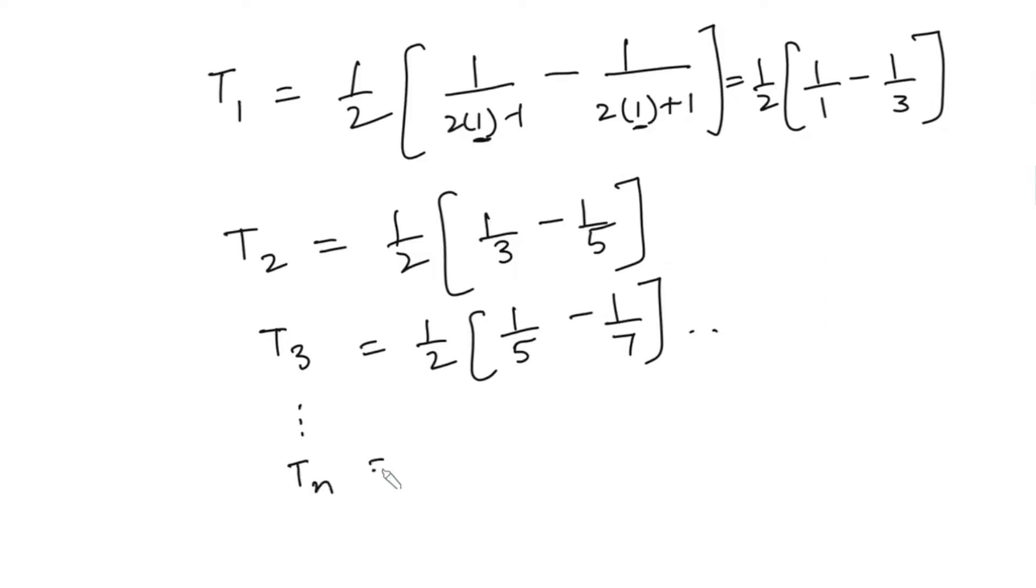Similarly, Tn will be equal to 1/2 times [1/(2n-1) - 1/(2n+1)]. Here we can see that we can cancel out negative 1/3 with positive 1/3, negative 1/5 with positive 1/5 when we add all the terms. Similarly, 1/7 will cancel out, and the same way this 1/(2n-1) will also cancel out. So we will be left with just 1/2 times (1 - 1/(2n+1)).